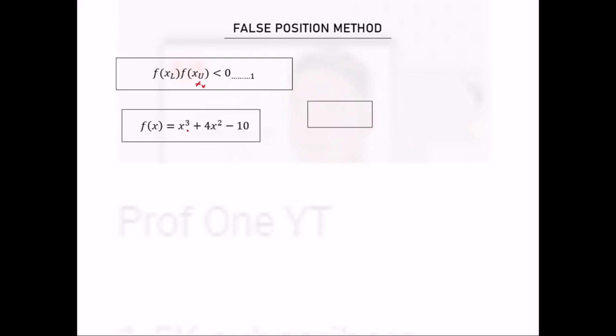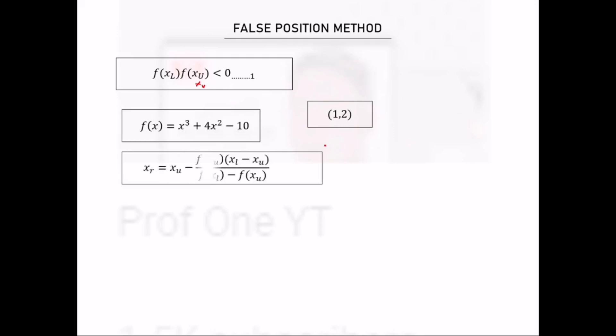Let's take this question where the function of x is equal to x³ + 4x² − 10. The bounds have been given to us. Since we are using the False Position Method, we are going to use a formula — that is what distinguishes False Position from Bisection.